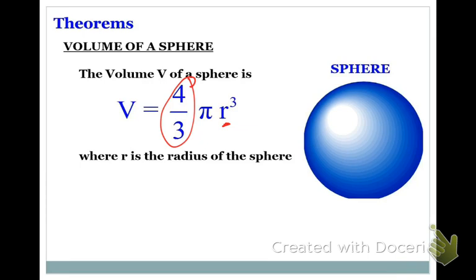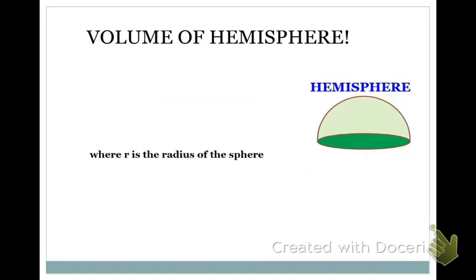So 4/3 πr³ means we just have to have the radius for our ball, for our sphere. Now, for a hemisphere, things are a little bit different. When we talked about surface area for a hemisphere, we talked about how we had to cover half the ball in paint or paper or whatever.